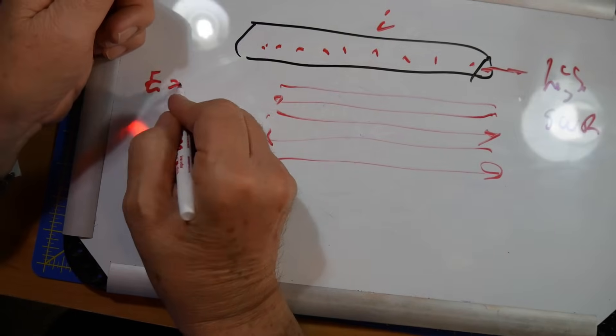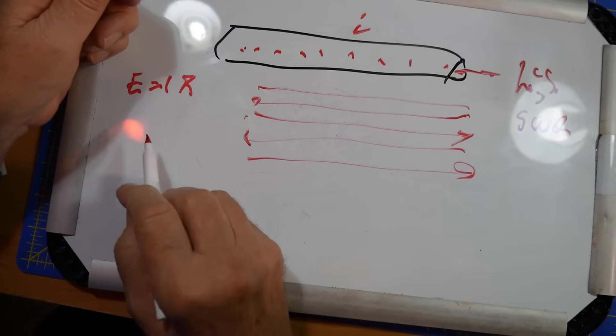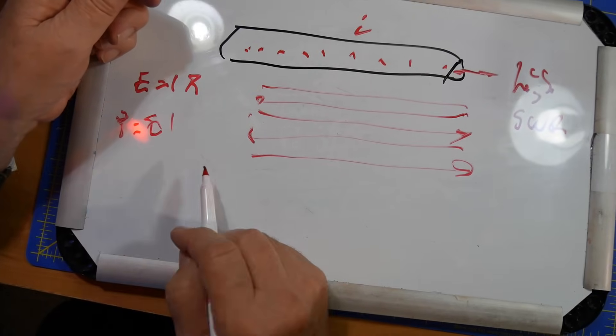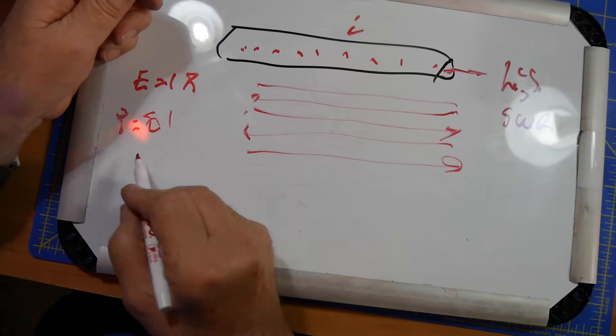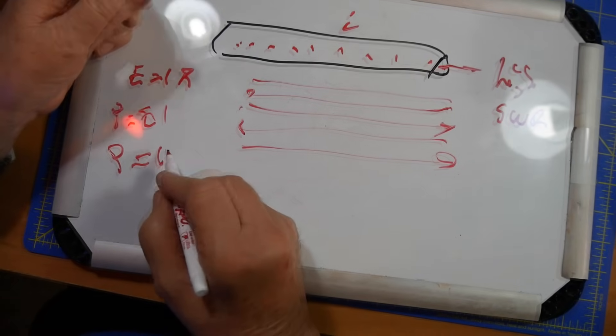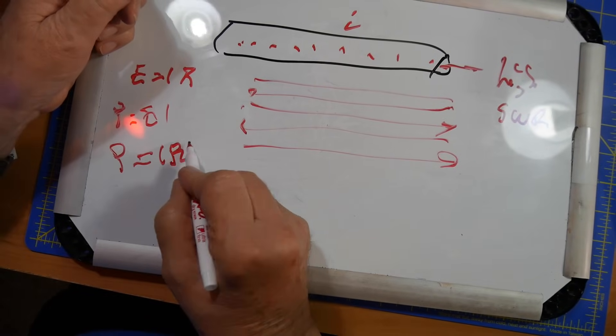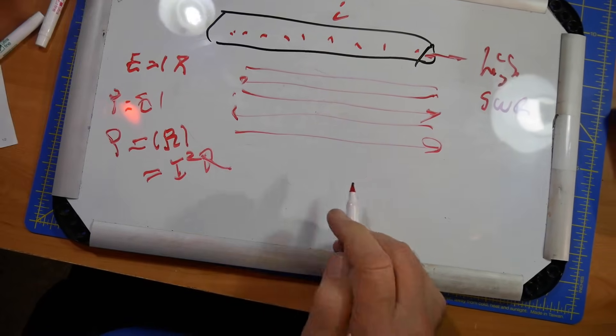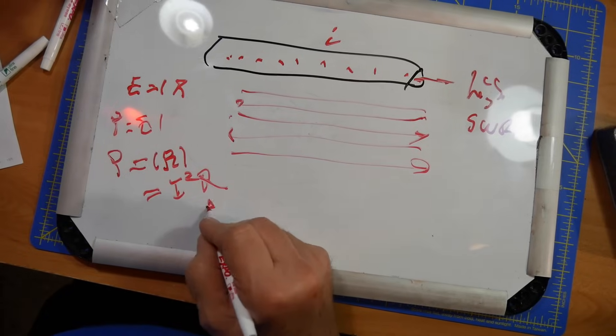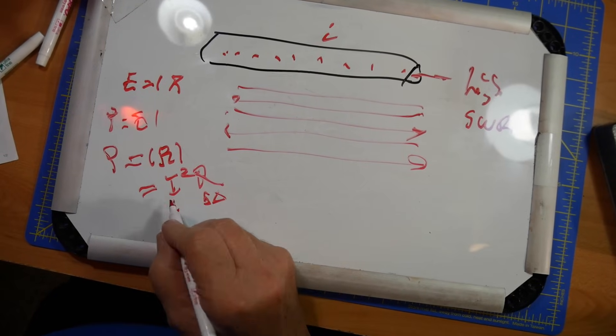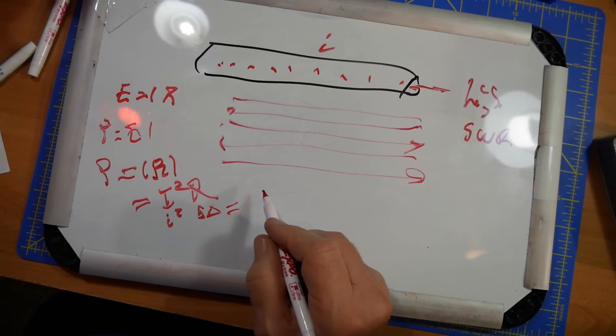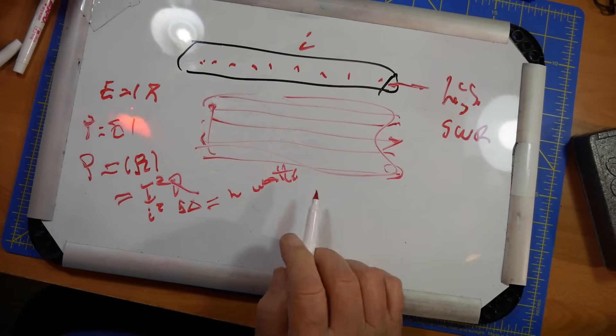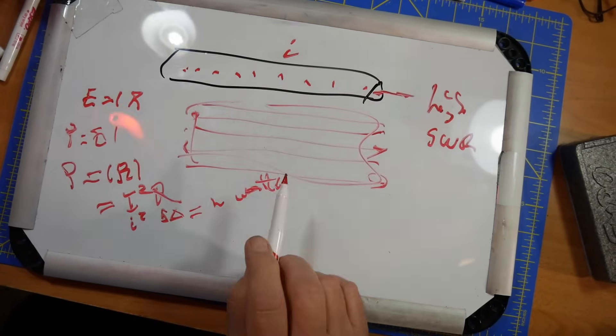I'm going to derive that formula because I can never quite remember. We know E equals I R, and so power equals E I. We can substitute I R for E, so power equals I R I, or equals I squared R. So we look at the impedance here, it's 50 ohms, and we take the current, square it, and that right there gives us the heat in watts. That's by this piece right here. So it's the current that matters.